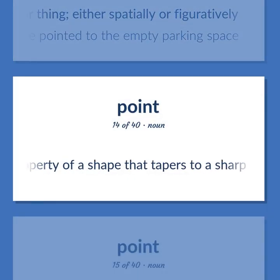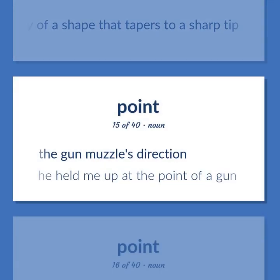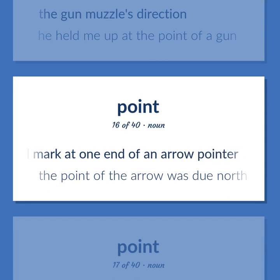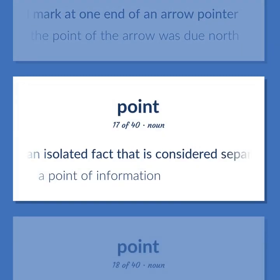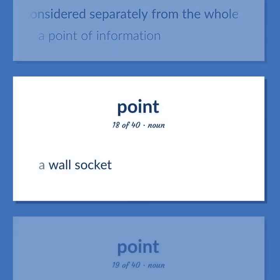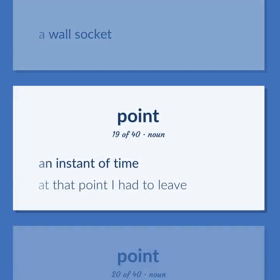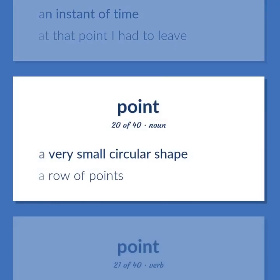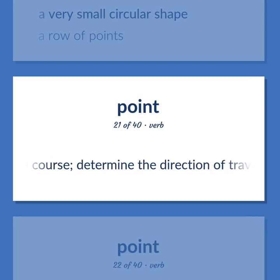The property of a shape that tapers to a sharp tip. The gun muzzle's direction — he held me up at the point of a gun. A V-shaped mark at one end of an arrow pointer — the point of the arrow was due north. An isolated fact considered separately from the whole — a point of information. A wall socket. An instant of time — at that point I had to leave. A very small circular shape. Direct the course; determine the direction of traveling.